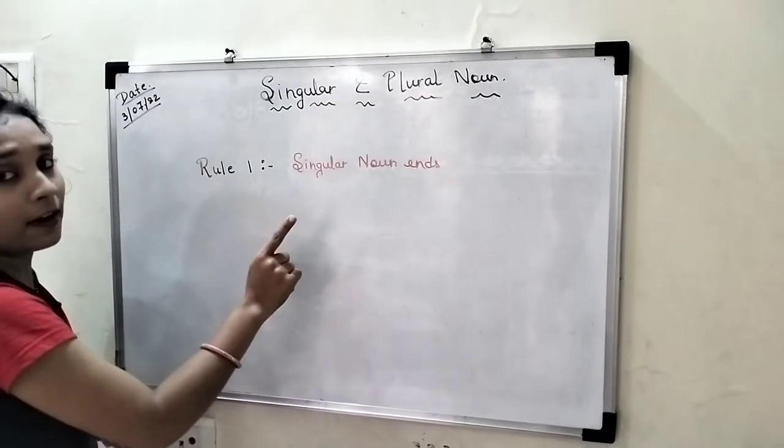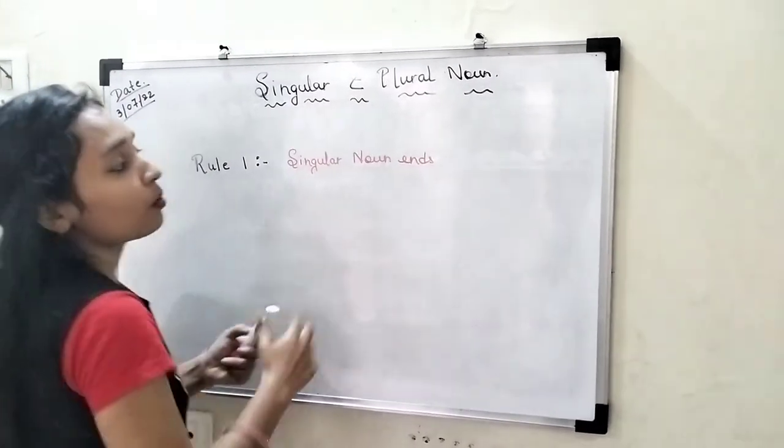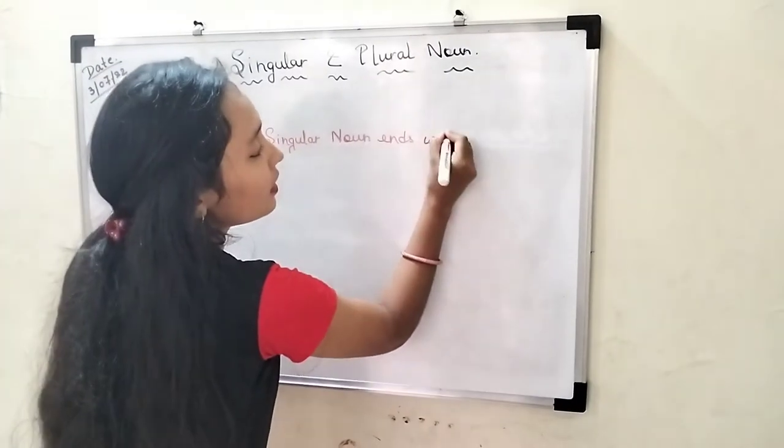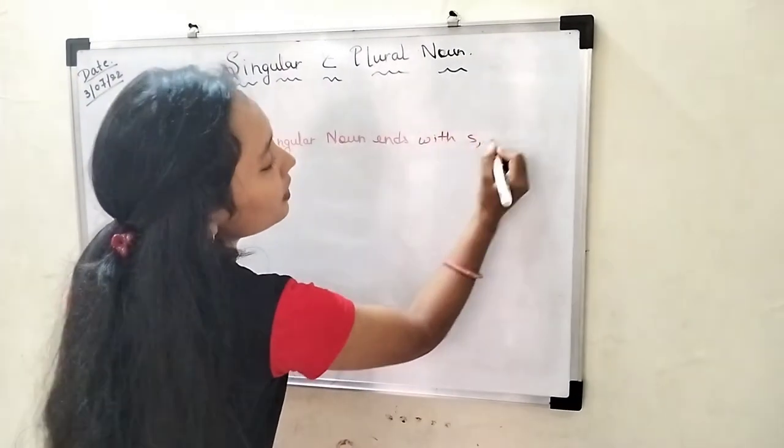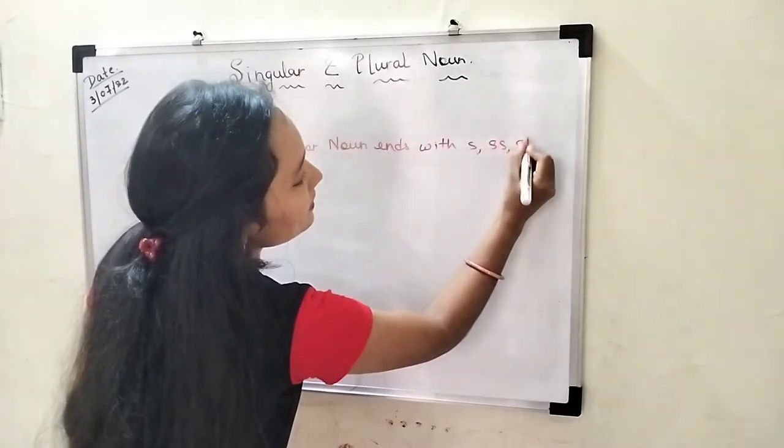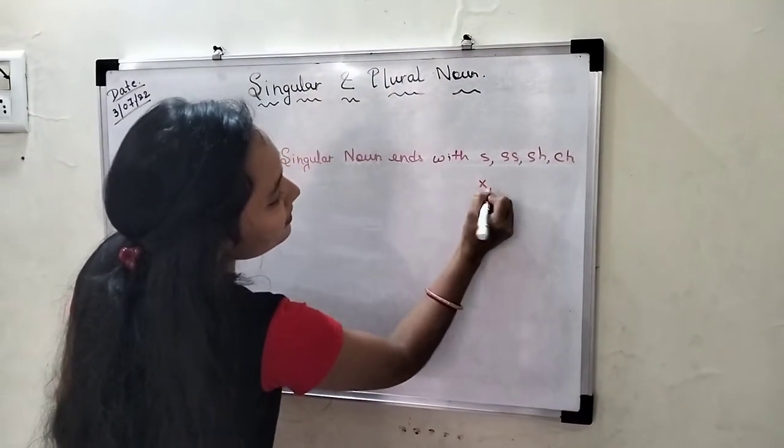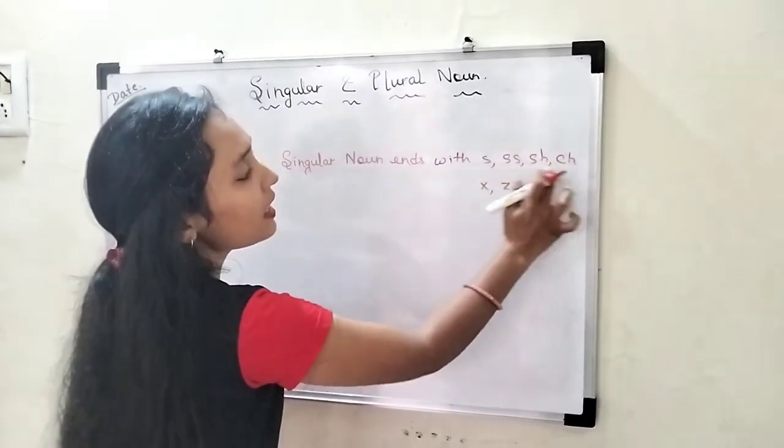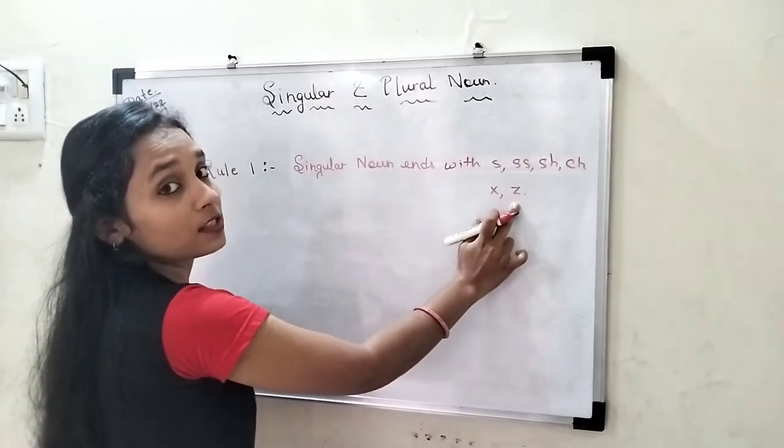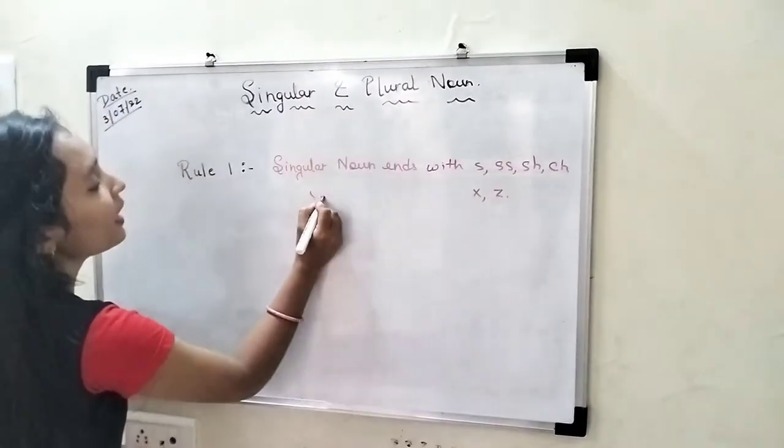Singular and Plural Noun Rule Number 1. Singular nouns ending with S, double S, SH, CH, X, and Z - wherever these letters end your singular noun, we have to add ES.